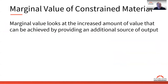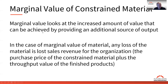That constrained material becomes the most valuable resource for the organization. The marginal value looks at the increased amount of value that can be achieved by providing an additional source of output, which requires an additional source of input material. In the case of marginal value material, the loss is the sales revenue for that item — because it's the purchase price of the constrained material plus the throughput value of that finished product — which is like lost sales for the organization.